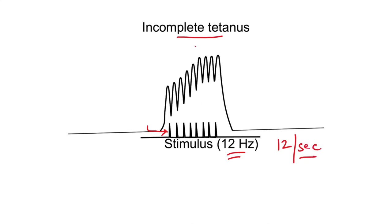These stimuli are falling in the relaxation phase of the simple muscle twitch. The first stimulus causes a simple muscle twitch. The second stimulus falls in the relaxation phase, and the third stimulus also falls in the relaxation phase. What we see is that with repeated stimulation, the height of contraction is continuously increasing.